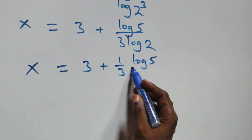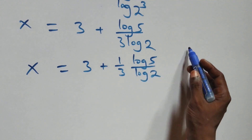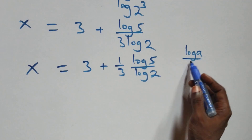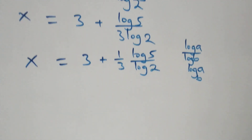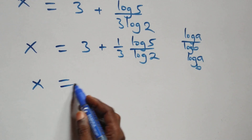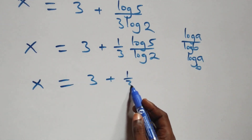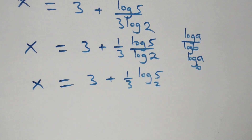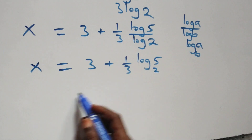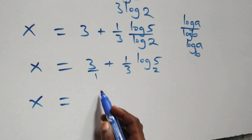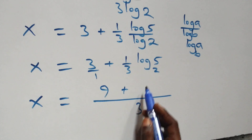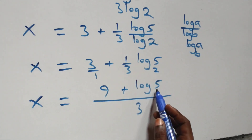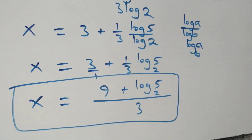This can also be written as x equals 3 plus one-third times log 5 over log 2. Applying the change of base formula, log a over log b equals log a to base b, we get x equals 3 plus one-third log₂5. Combining as one fraction: x equals 9 plus log₂5, all over 3.